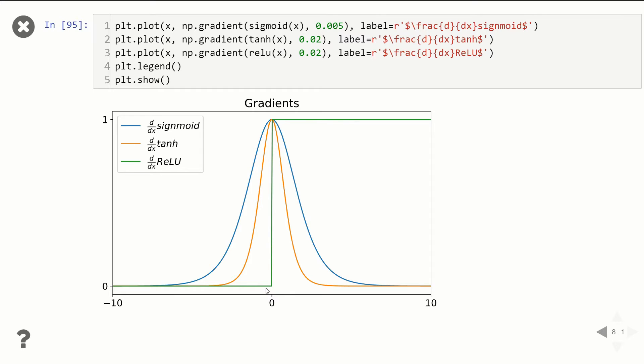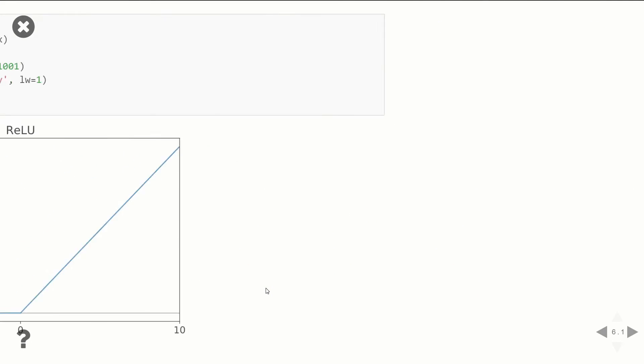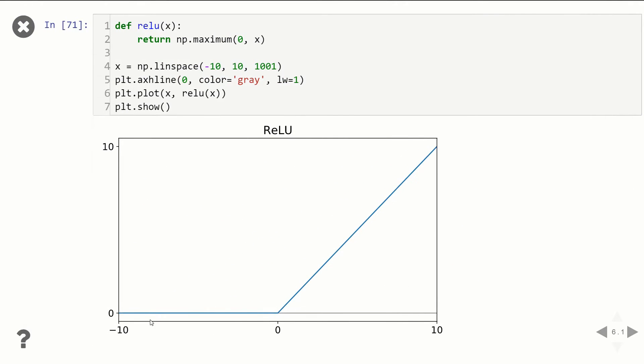So this is where leaky ReLU comes in. Leaky ReLU, instead of it being zero for negative values, it'll have a slightly positive slope. So just a small slope here. That way, if we do get some weights that are initialized to negative values or inputs that are initialized to negative values, you're able to still train.